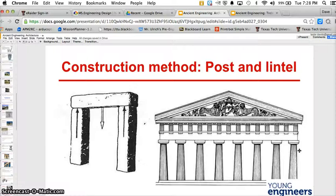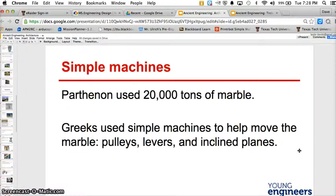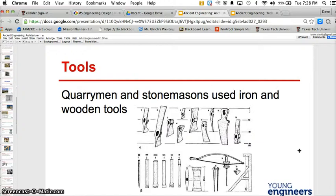Here are some more images of this. It used over 20,000 tons of marble and a wide amount of simple machines to make this happen. Here are the tools the Quarrymen's stone masons used were iron and wooden tools.